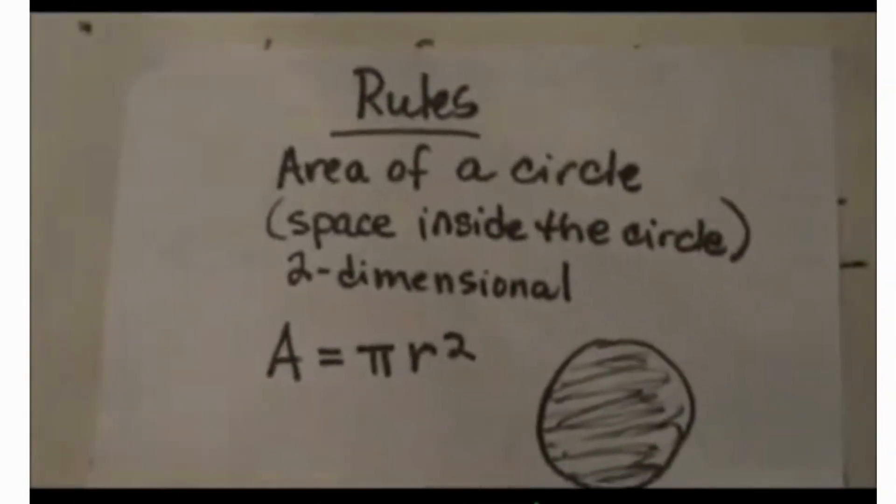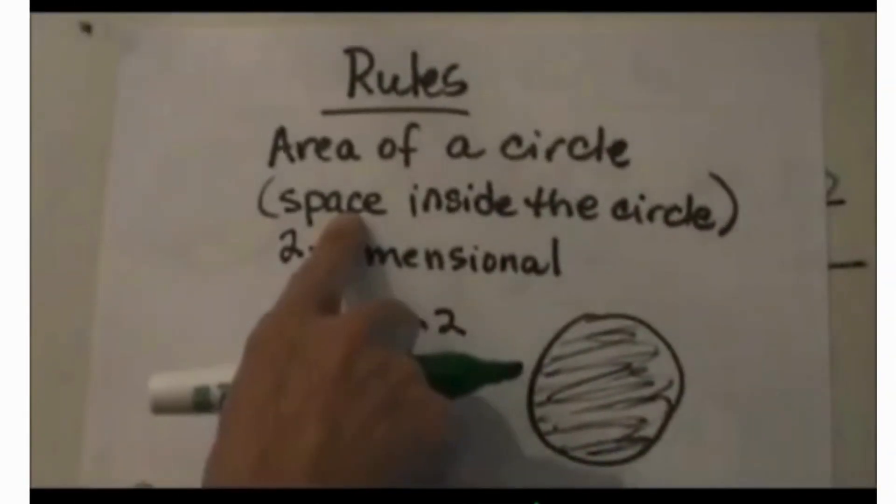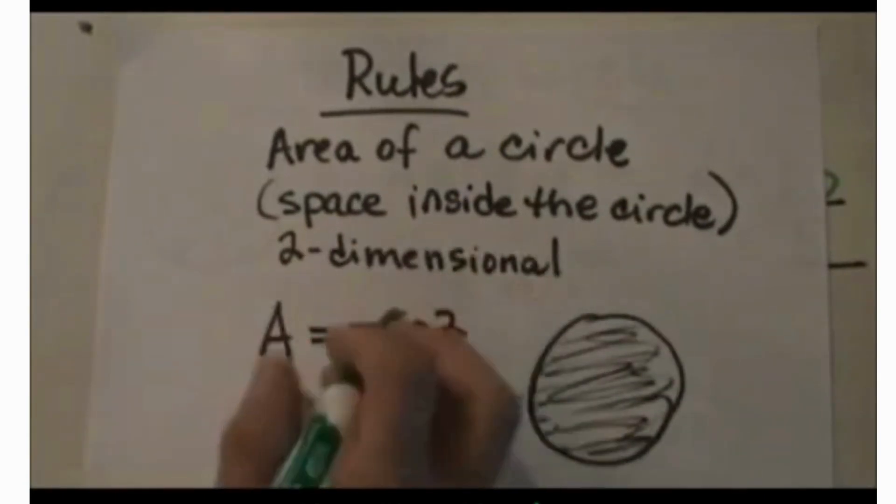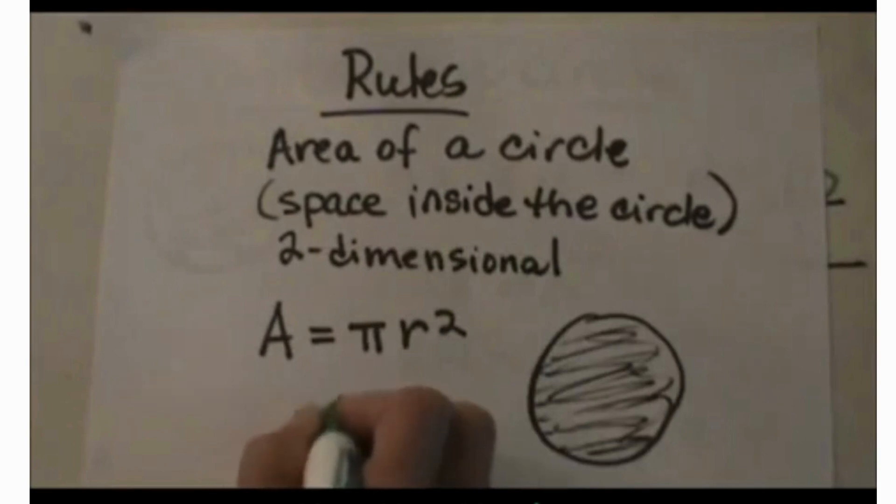Here are the rules of the area of a circle. The area of a circle is the space inside the circle. It is two dimensional so your units will always be in squares.